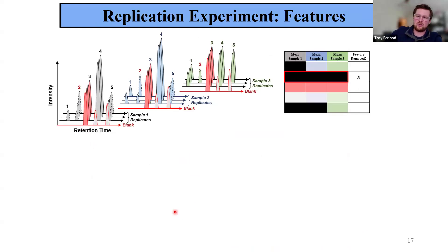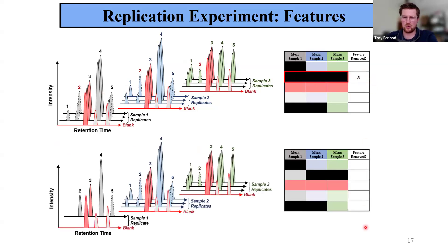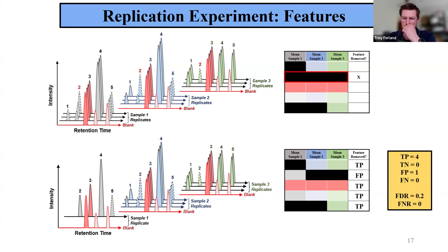To observe the effect of replication reduction at the feature level, we have to consider more than one sample. Bringing back the illustration with three samples in triplicate and the tabulated result — in the earlier example, all occurrences of feature two were filtered out. But if we compare this to a scenario where we're only considering one replicate of our first gray sample, feature two now passes our filtering decisions and is kept in sample one. In this case, the occurrence of feature two in the gray sample is now viable, and in our tabulated results feature two is no longer removed — a false positive at the feature level.